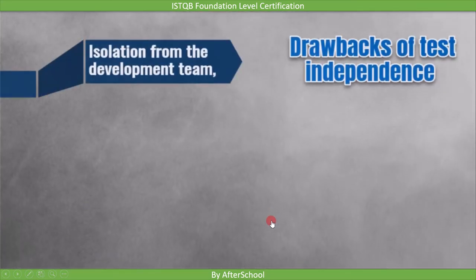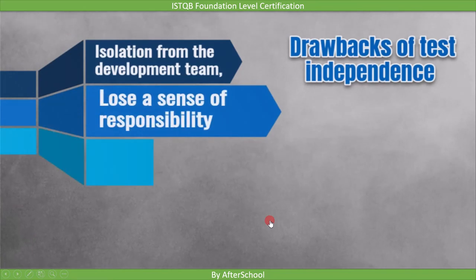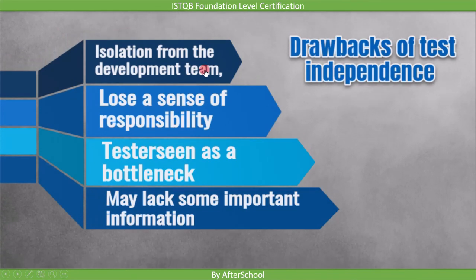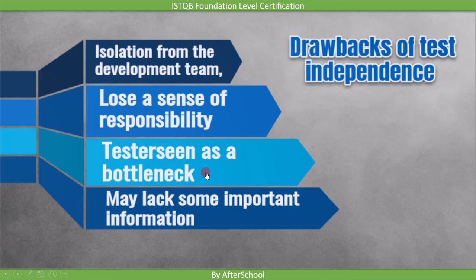There are also a few drawbacks of independent testing. The first drawback is isolation from the development team, which may lead to a lack of collaboration, delays in providing feedback, or an adversarial relationship with the development team. The second drawback is that developers may lose a sense of responsibility for quality. The third point is that independent testers may be seen as a bottleneck — for example, during a release, if the tester finds a critical defect, people may feel the tester is preventing a timely release. The last point is that independent testers may lack some important information.